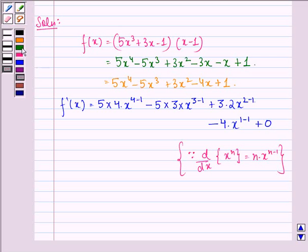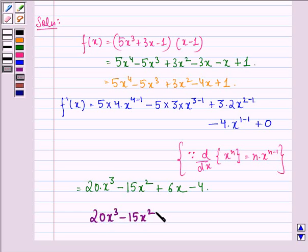We have 5×4 is 20x³ - 15x² + 6x - 4. So our answer to this question is 20x³-15x²+6x-4.